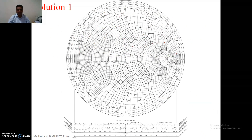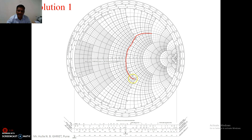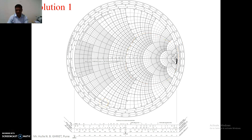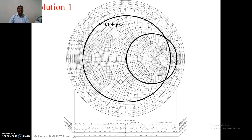We always have two solutions in single stub matching. There is one R equals one circle — this circle has a lot of importance in both single stub and double stub matching. We will plot the normalized load impedance, which is 0.1 plus j0.5, take the center of the Smith chart as center, and draw the circle. This circle is generally known as the S circle or VSWR circle — the standing wave ratio circle.